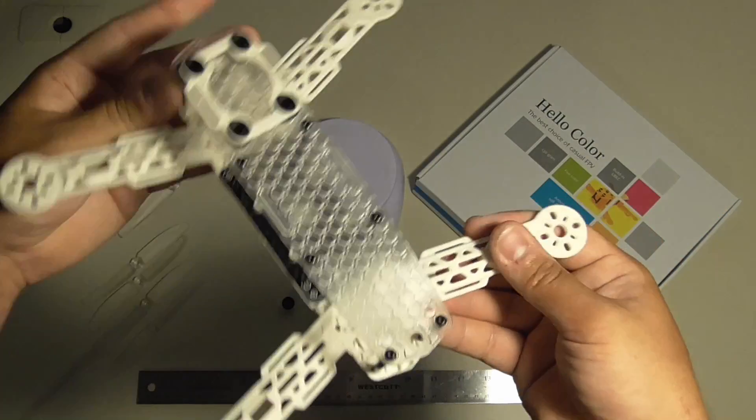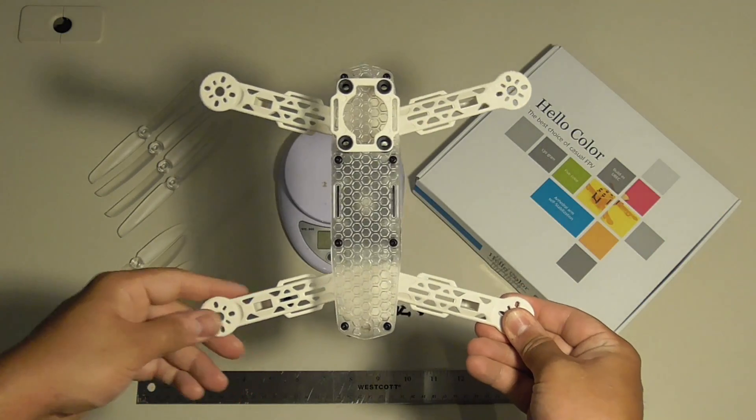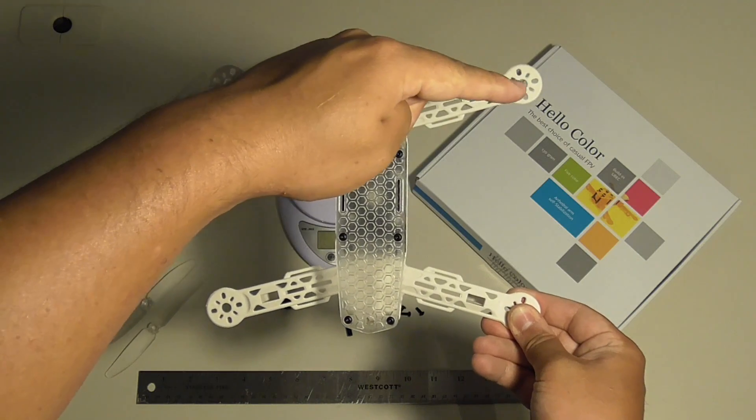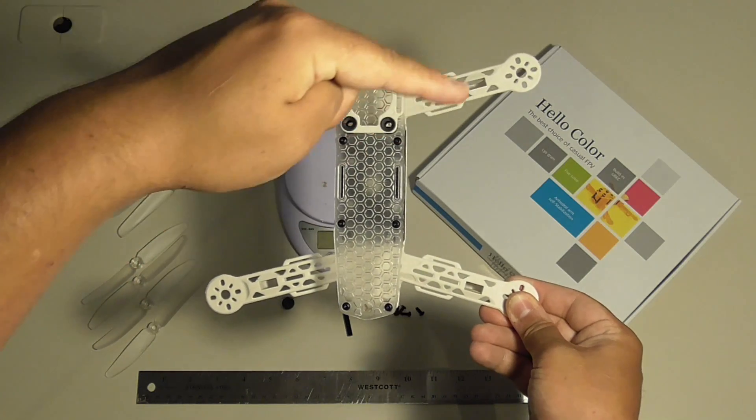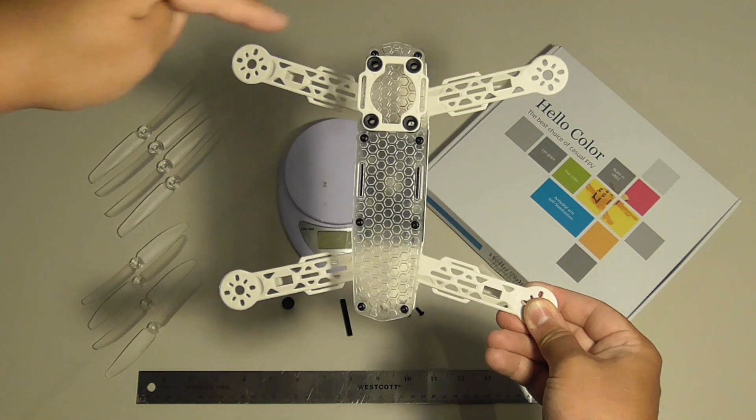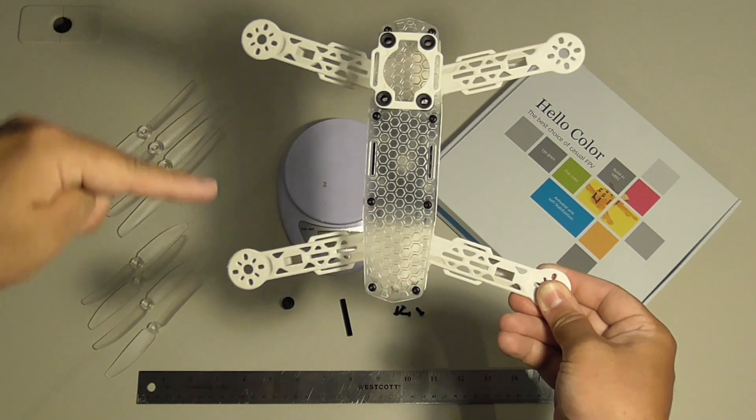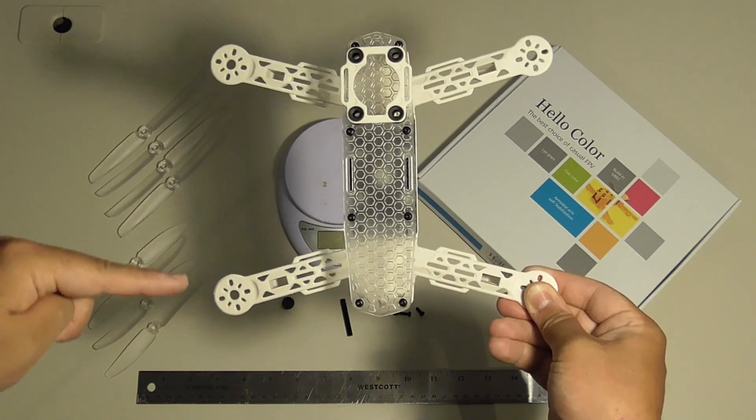The motor spacing is 257mm diagonally, 202mm laterally, and 158mm longitudinally.